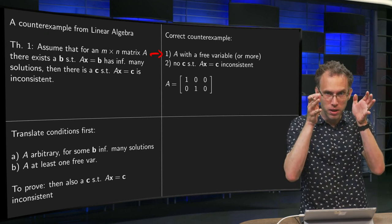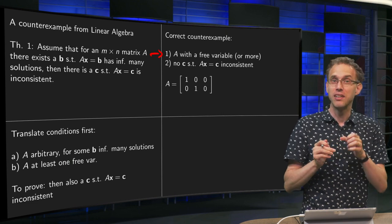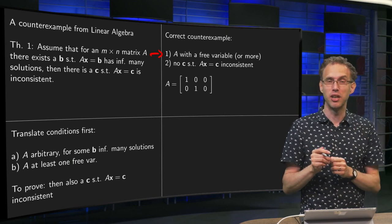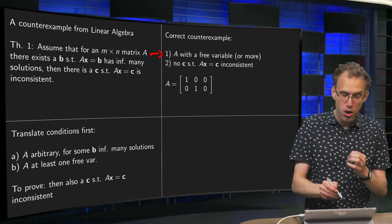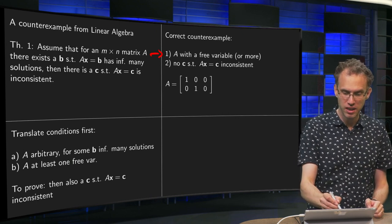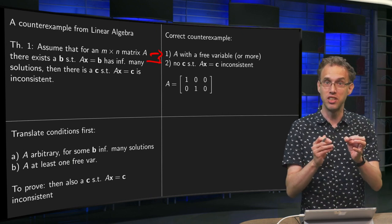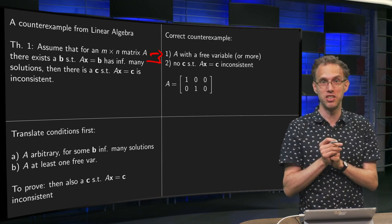But matrix A with a free variable. And then in a correct counterexample, there is no C such that Ax = C is inconsistent. That Ax = C can never become inconsistent.